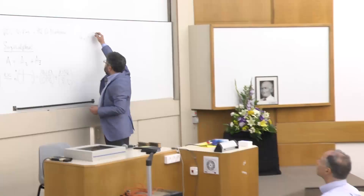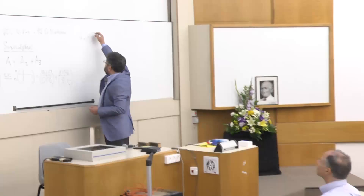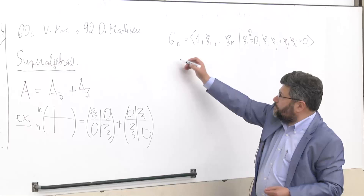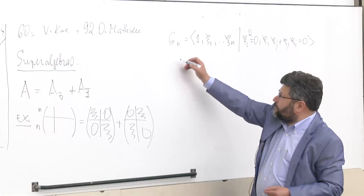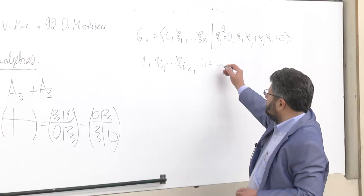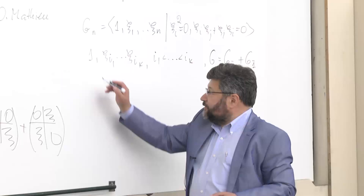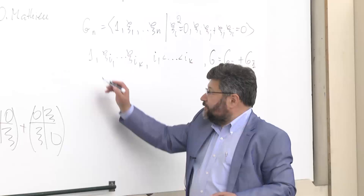Another example: let us consider the Grassmann algebra, presented by generators and relations. These are Grassmann variables; their squares are equal to zero, and they anticommute. The basis of this algebra consists of ordered products. If the length is even, we say the element is even; if the length is odd, we say it is odd. So this algebra becomes a superalgebra. You could also consider countably many variables — so, Grassmann algebra.